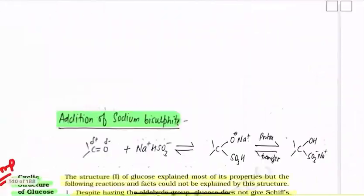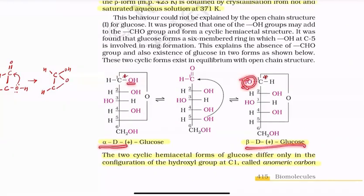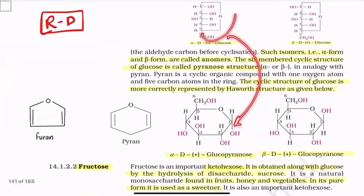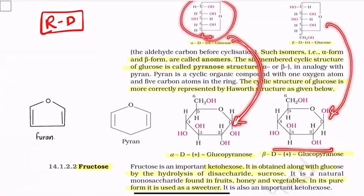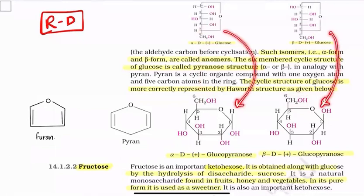During cyclization, the OH of the fifth carbon attacks the first carbon — the aldehydic carbon. As a result, the aldehyde group is converted into a hydroxy group. If the new OH at C1 is on the right, it is called alpha-D form; if on the left, it is called beta-D-glucose. In the Haworth projection, the CH2OH group always goes up.